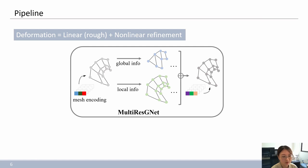And our research focuses on two aspects: encoding mesh features and designing the graph neural networks.